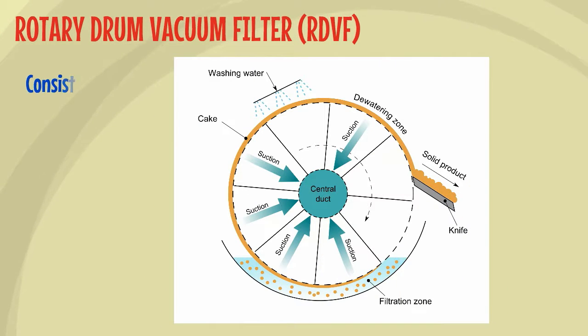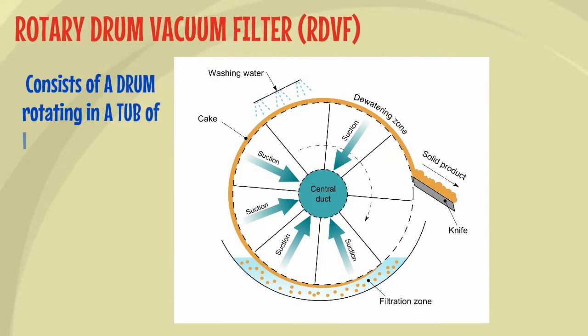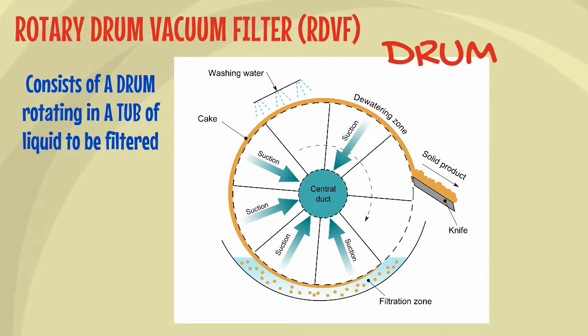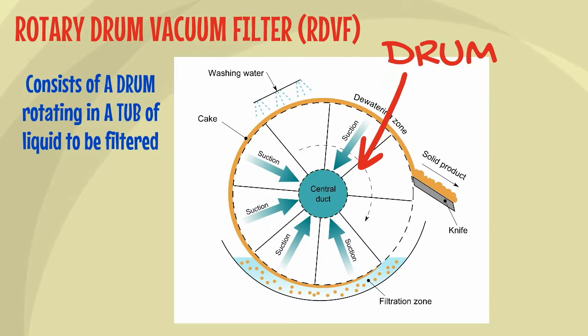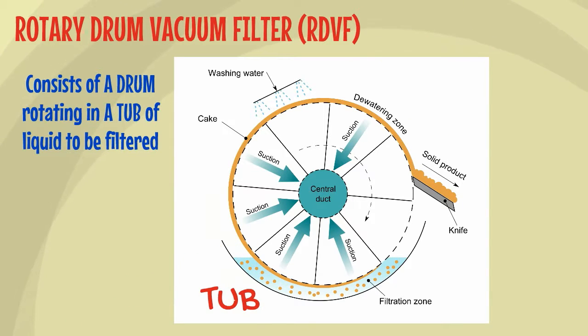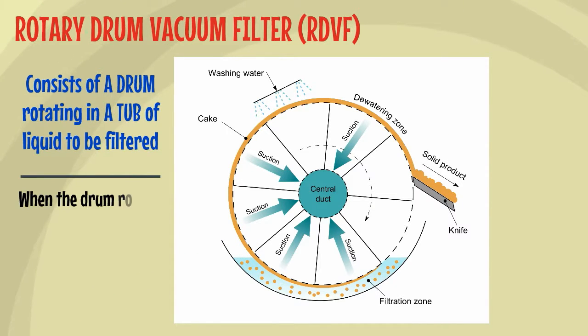Rotary Drum Vacuum Filter. This consists of a drum rotating in a tub of liquid to be filtered. When the drum rotates, the filtrate is drawn and the cake is deposited on the drum surface.